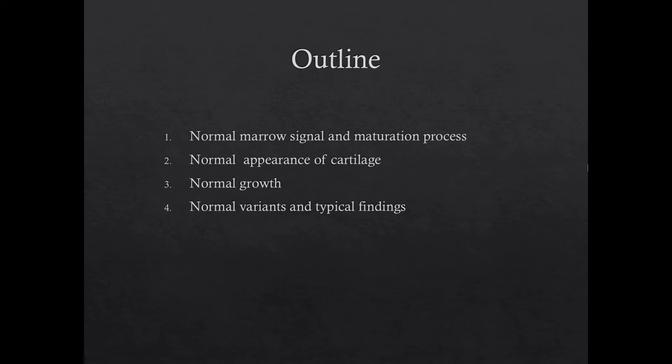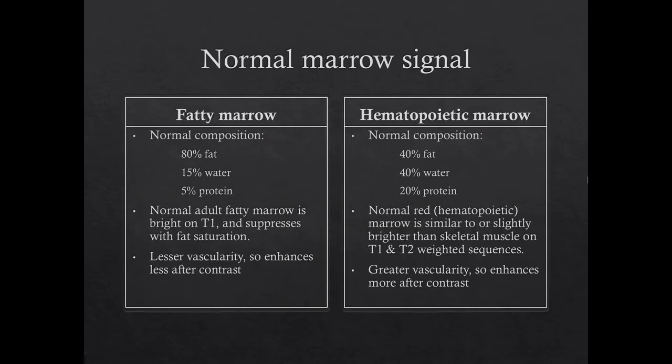We will begin by discussing normal marrow signal and maturation. Pediatric MR imaging can be challenging in the musculoskeletal system due to the differences based on patient age, so it is important to know the age of the patient that you are imaging. The normal fatty adult marrow is comprised of approximately 80% fat and therefore mostly follows fat signal, so is bright on T1-weighted images and suppresses with fat saturation techniques. It also has less vascularity and does not enhance much following contrast.